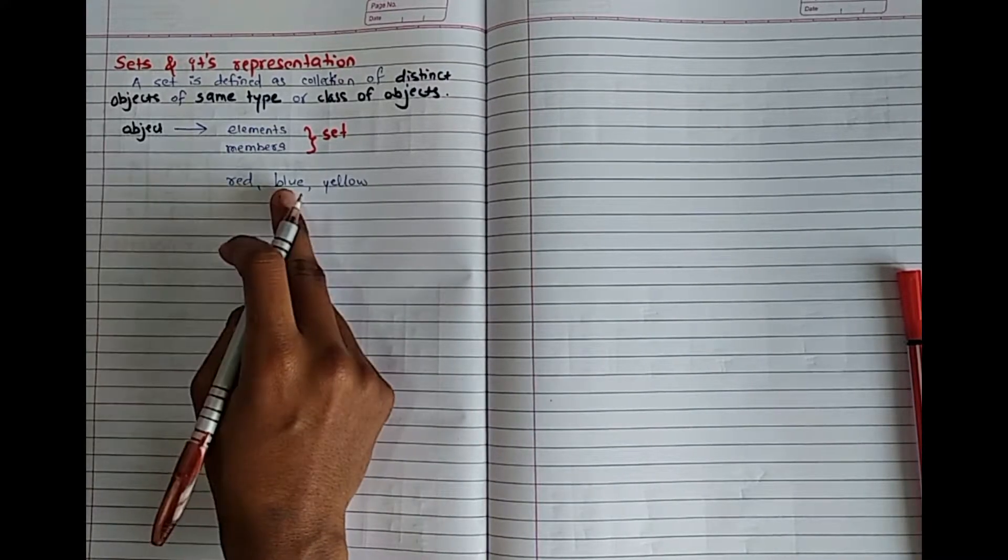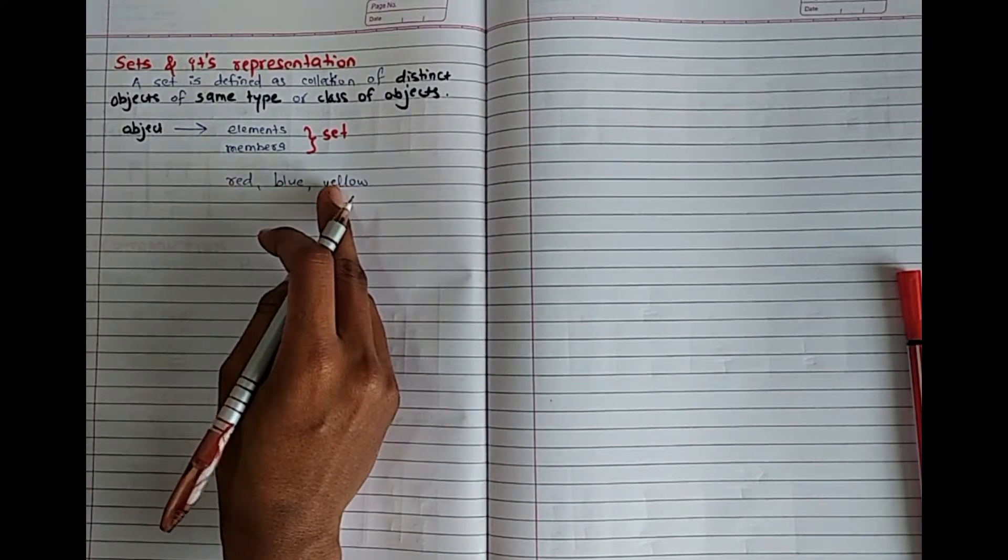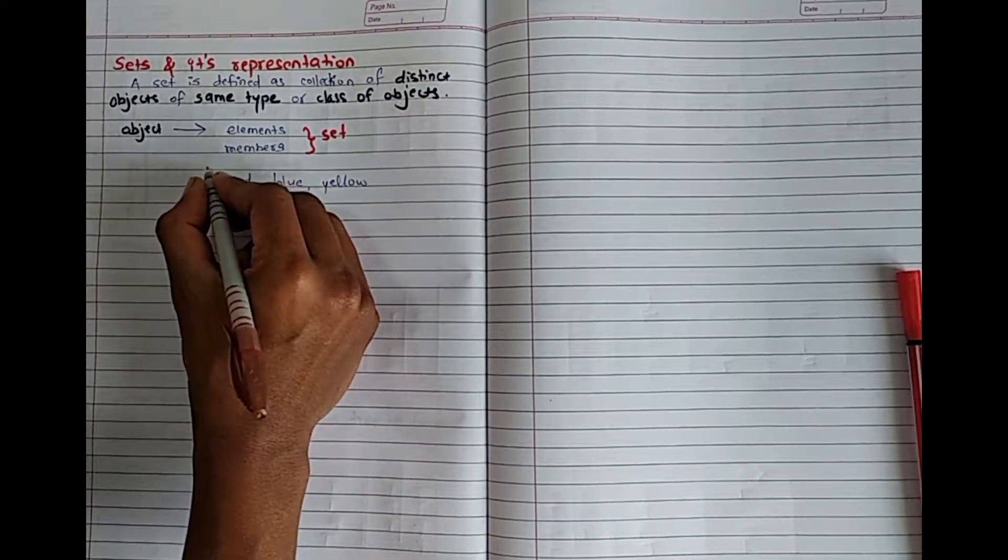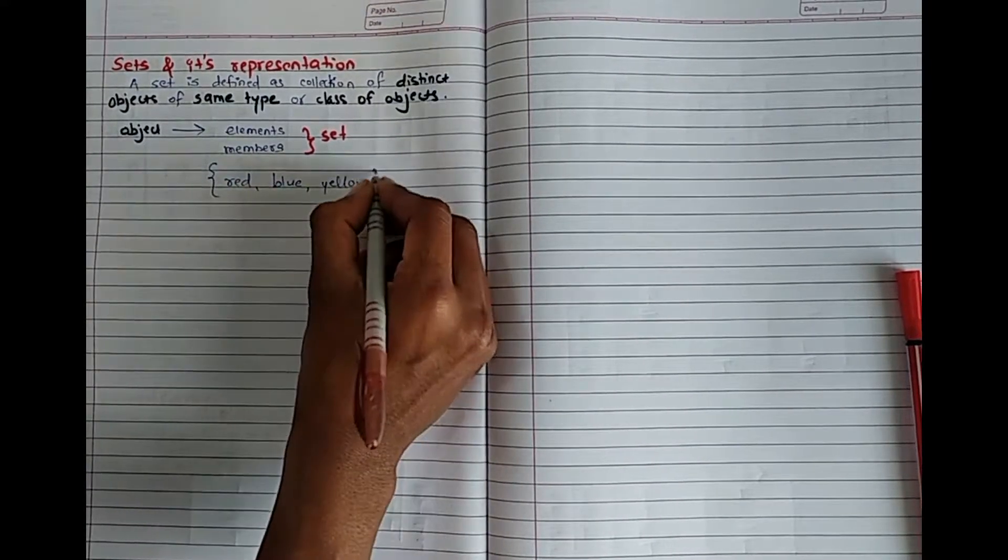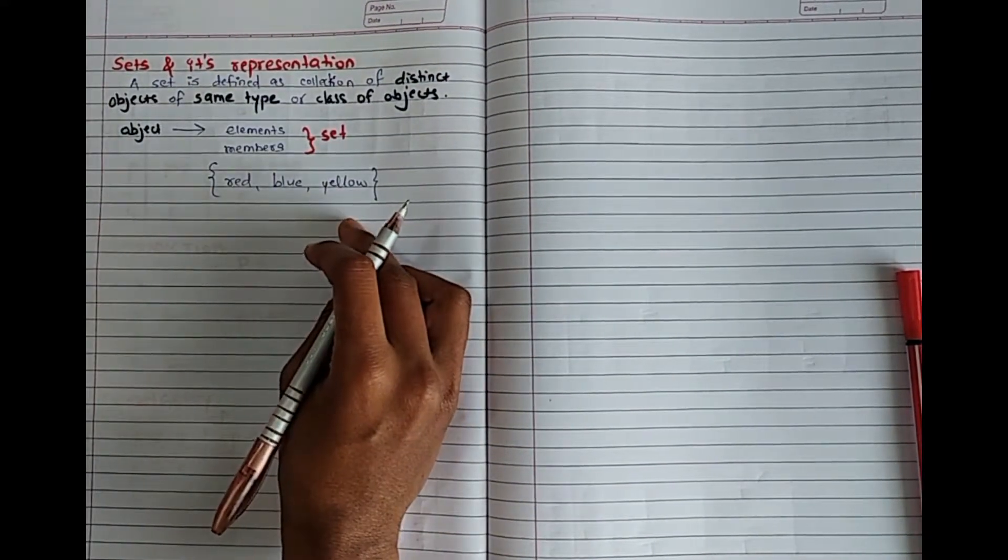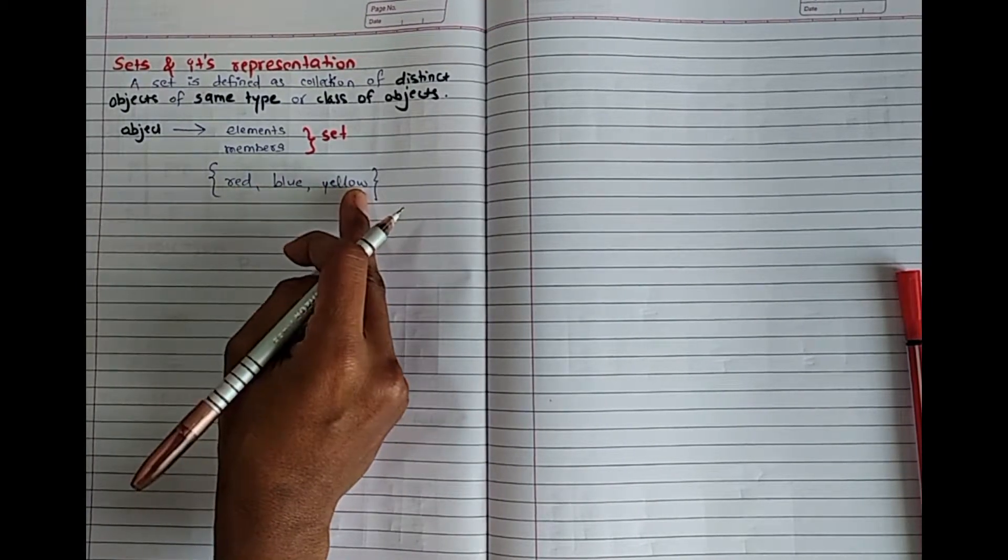I will simply make a collection. So for the collection, put them in two curly braces. Whatever are different elements, but their category is the same - what are the colors?